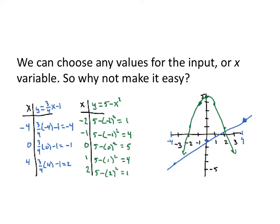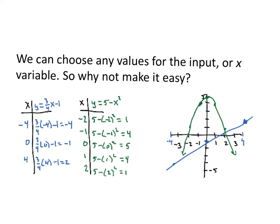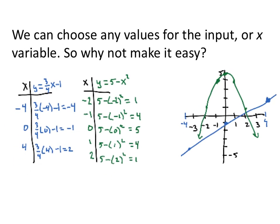Alright, so while we're doing this, we can choose any values for x as our input. So if we're going to choose any values, how about we make easy values? In my first equation, as I solve for y, I get y equals 3 fourths x minus 1. This denominator of 4 tells me I'm going to choose inputs that are multiples of 4, so that I can multiply by the fourth and have easier values to deal with.